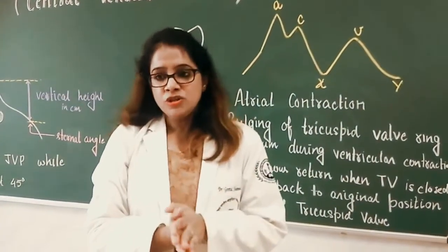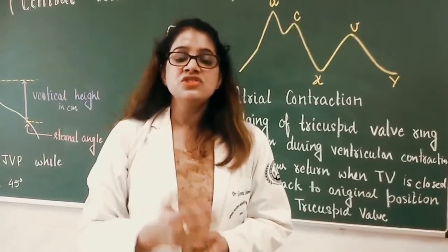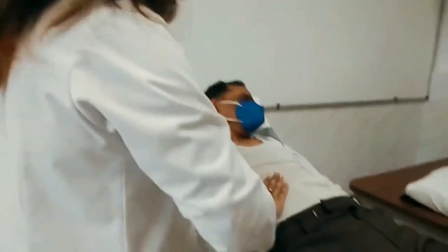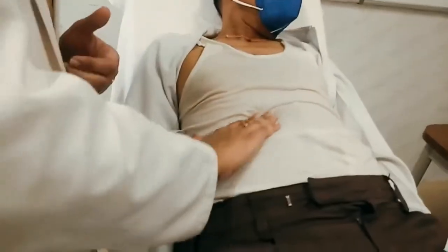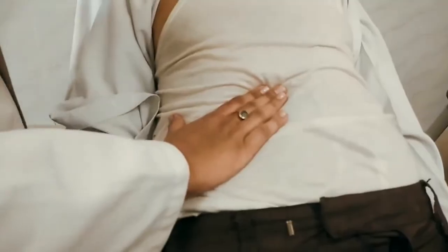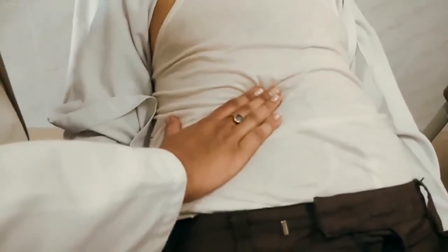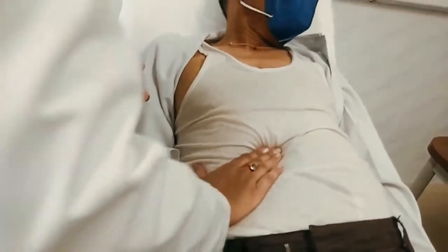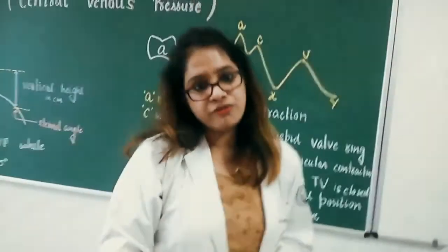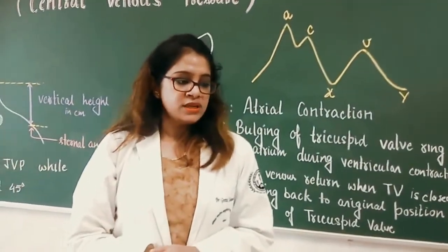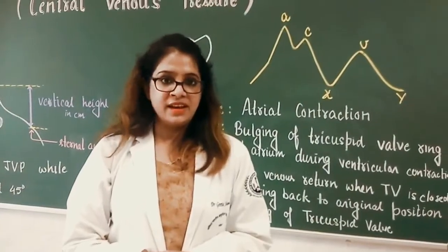Pressing on the abdomen causes a change in jugular venous pulse — this is called the abdominal jugular reflex. When pressure is applied at the right hypochondrium, there is an increase in jugular venous pressure. This reflex is not present with carotid artery pulsations.